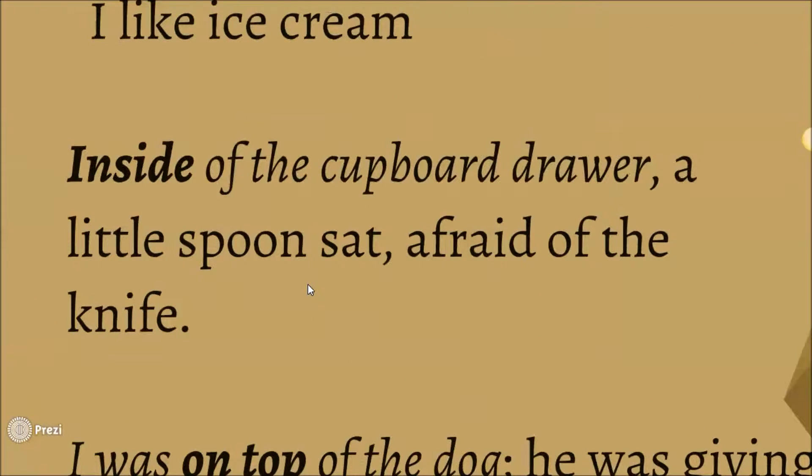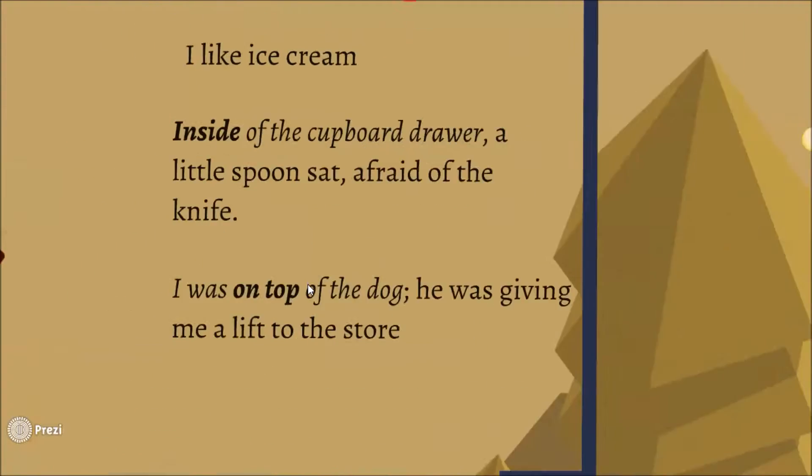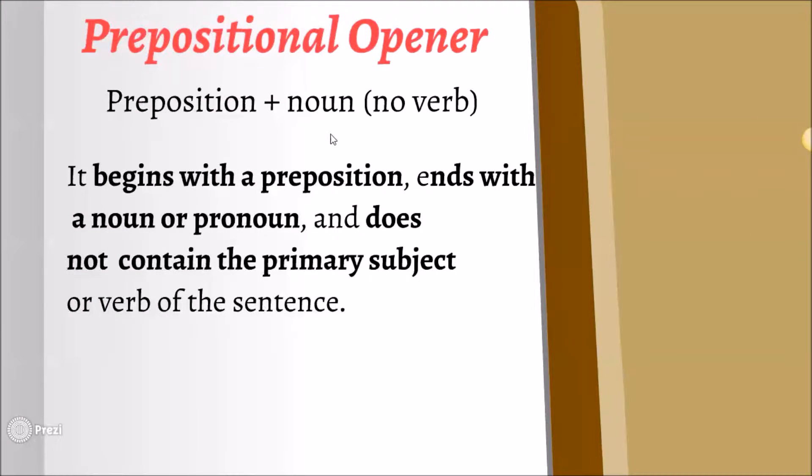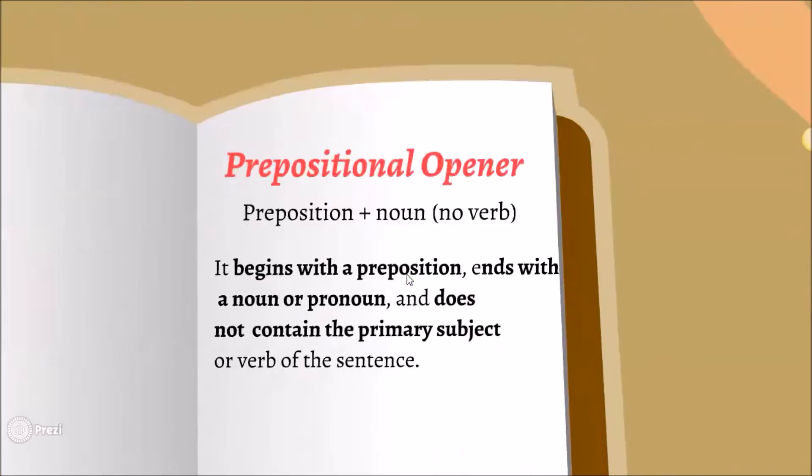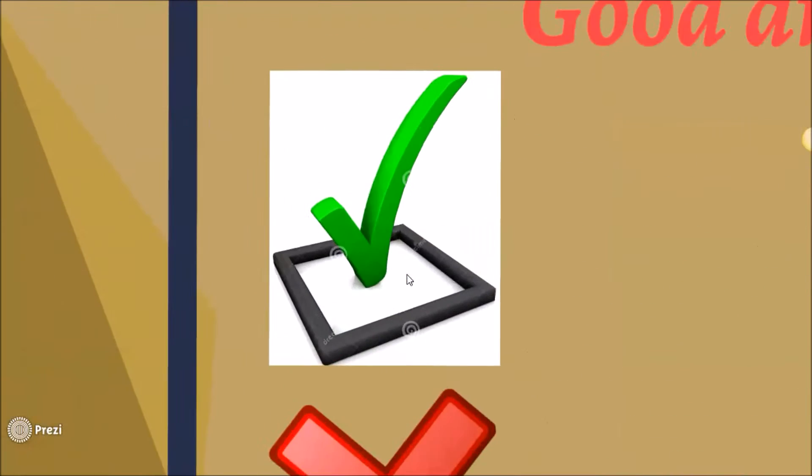Inside of the cupboard drawer, a little spoon sat, afraid of a knife. Let's look at our definition. It begins with a preposition inside, ends with a noun or pronoun, the cupboard drawer, and does not contain the primary subject of the little spoon. So this is a correct example.